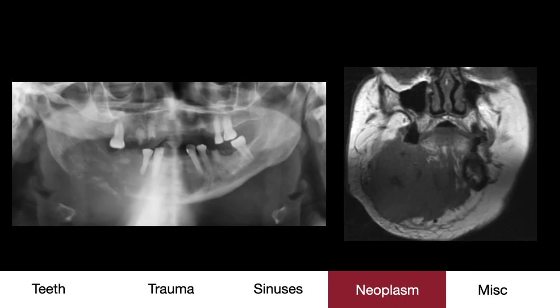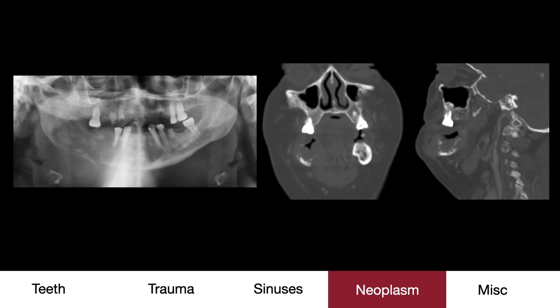Here is another more severe case on panorex with corresponding MR, and here is another. Since the alveolar nerve is damaged, the patient will typically have sensory loss in this region.